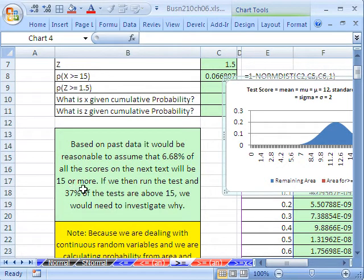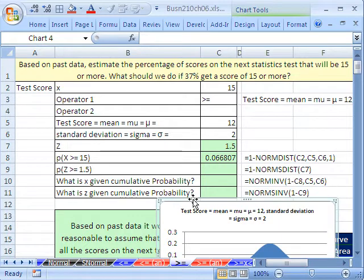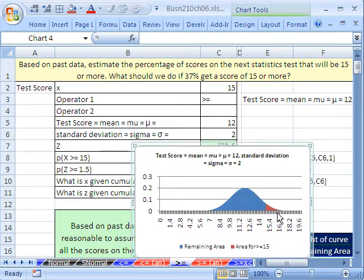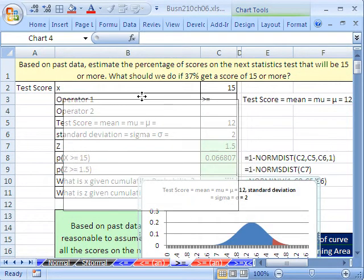What's happening here? 37. We must have an incredibly smart class or maybe the teacher finally knew what he was doing or something. So based on past data, it would be reasonable to assume that 6.68% of all the scores on the next test will be 15 or more. If we run the test and 37% of the tests are above 15, we need to investigate why. Maybe the class is just doing a great job, they're all studying real hard. Maybe the teacher's doing a better job. Maybe the answer key got out.